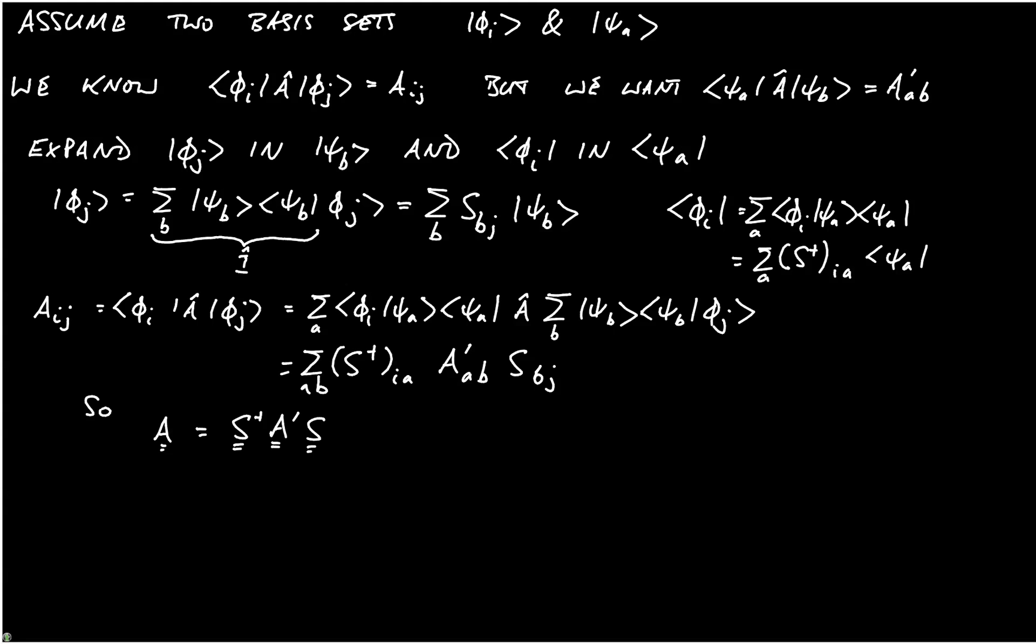We can find this very simply. So, how do we get it? We're just going to multiply on the left and the right by S and S dagger. So, S acting on A is equal to S S dagger A' S, but again remember that S S dagger is just the identity. So, that's equal to A' S and then we find that S A S dagger is equal to A' S S dagger which is just A'.